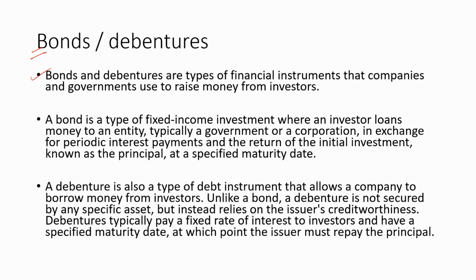Bonds and debentures are types of financial instruments that companies and governments use to raise money from investors. A bond is a fixed income investment where an investor loans money to an entity — typically a government or corporation — in exchange for periodic interest payments and the return of the principal at a specified maturity date. A debenture is also a debt instrument, but unlike a bond, it is not secured by any specific asset; instead it relies on the issuer's creditworthiness, paying a fixed interest rate and repaying the principal at maturity.